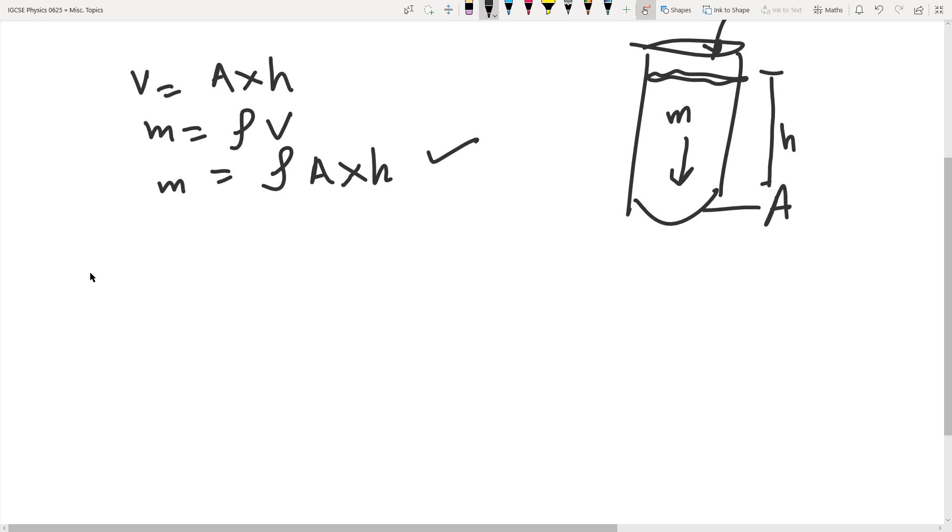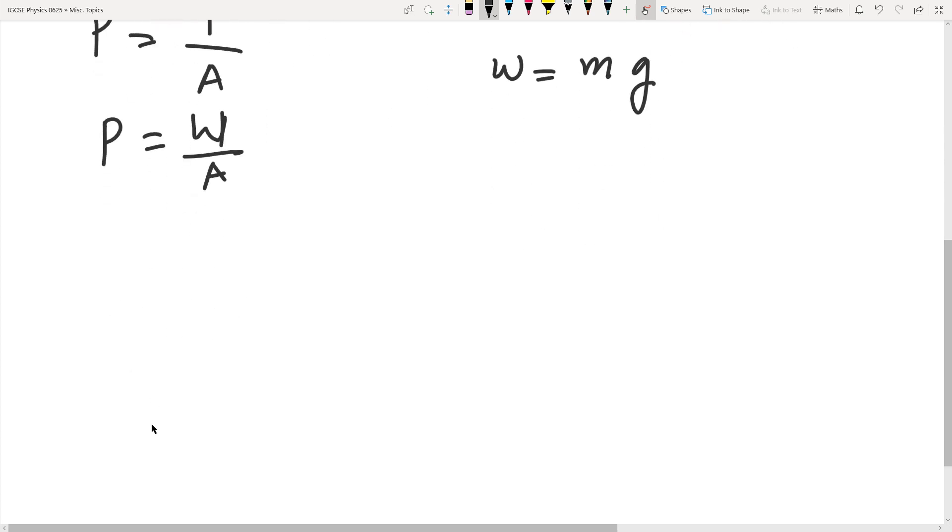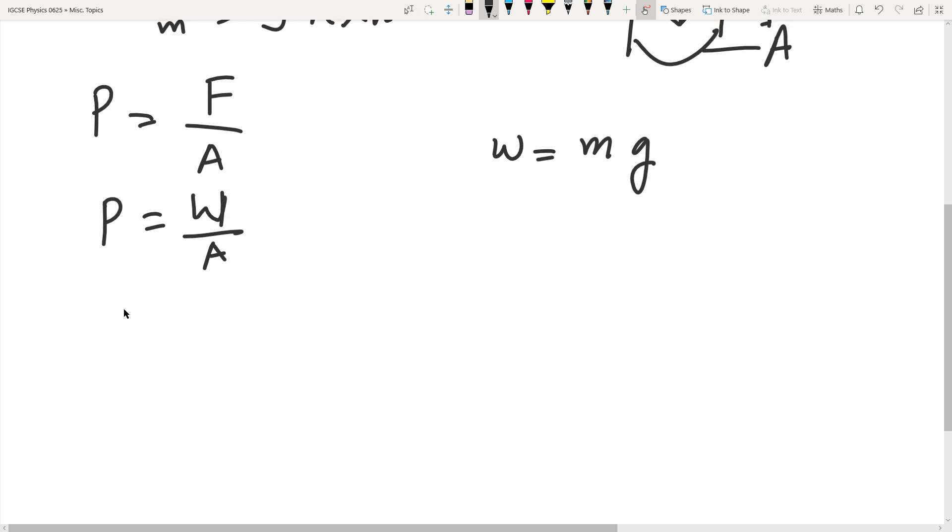Moving on, we want to know the pressure it's exerting. We know that pressure is force over area. Since this is mass, every mass has weight, which is also a force. Weight is m times g. So P equals weight over area, the weight of this water column over this area at the bottom. We're trying to derive a relationship.